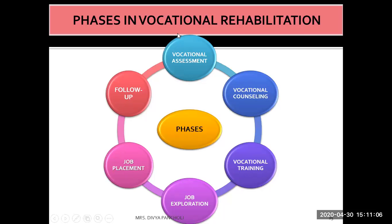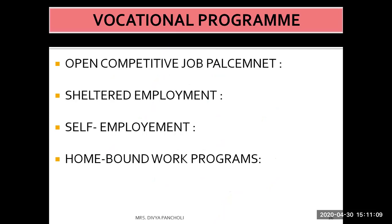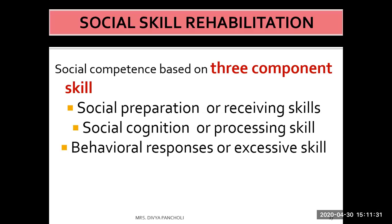Based on vocational rehabilitation, different programs are conducted in the community: open competitive job placement, sheltered employment, self-employment, and homebound work programs. Social skill rehabilitation is another type of rehabilitation where social skills are taught during the process, based on three component skills.